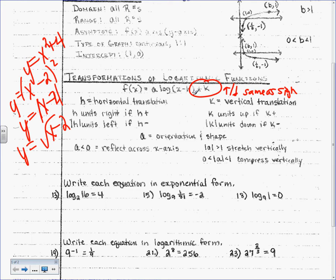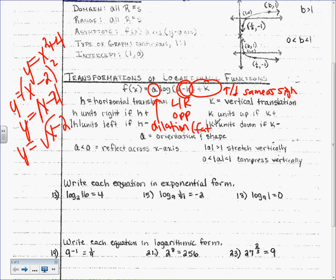It is the same thing we've been talking about pretty much all year — just a new graph. Up or down, same as the sign. That's what all this formal notation says, just written in a very mathy way. What's inside a grouping symbol moves left or right, opposite of the sign. The A in front causes a dilation — fat or skinny. And a negative in front is a flip over the x-axis. One of these days we'll use the fancy words — stretch, compression, k units up — but not today.